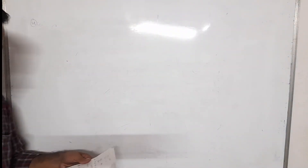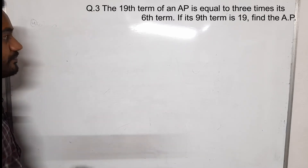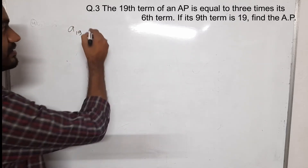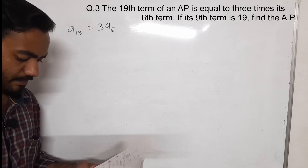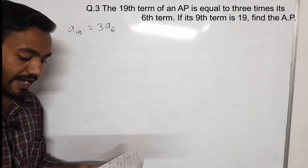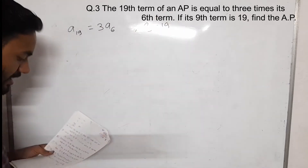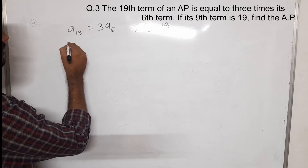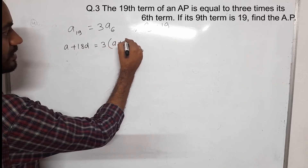Now we go towards our third question: the 19th term of an AP is equal to 3 times its 6th term. Here we are not given the AP directly; the condition is that the 19th term equals 3 times the 6th term. If its 9th term is 19, the second condition is A9 equals 19. Then find the AP. So it becomes: A plus 18D equals 3(A plus 5D).